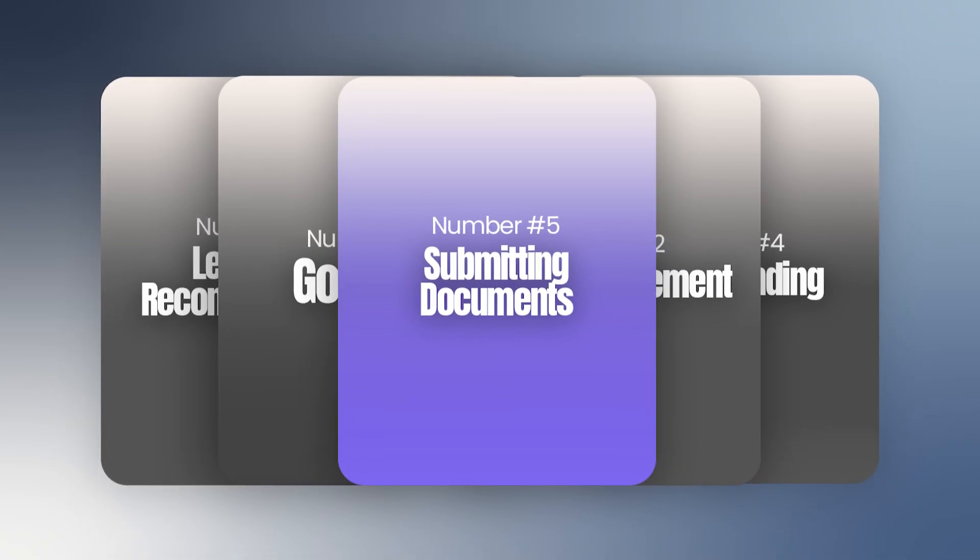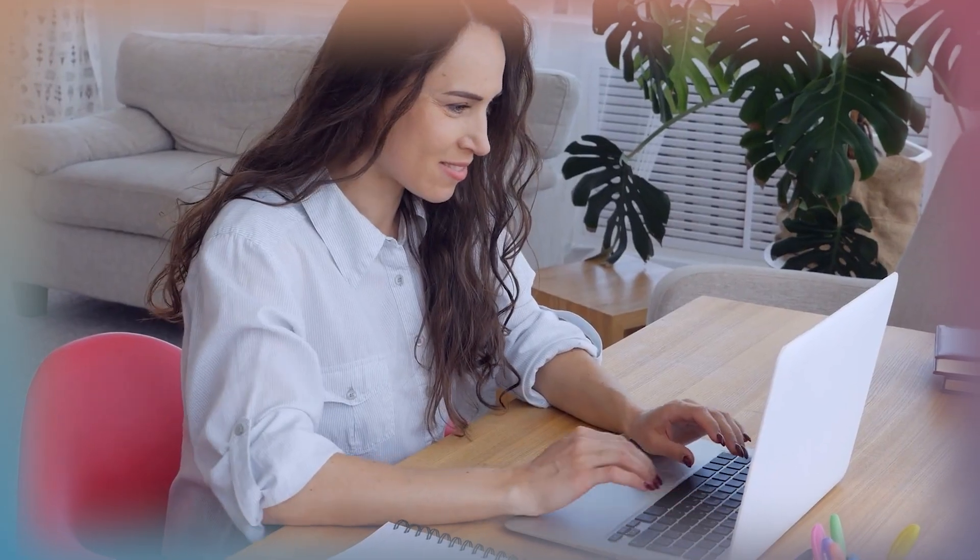The final item is actually submitting all of these materials. Each school has a different online portal where you'll upload documents in different ways, and you might have to re-enter all your CV information manually. Don't leave it to the last minute — start those applications weeks in advance because simply filling in all the fields can be time consuming. And proofread everything. At this point, reviewers are looking for reasons to exclude people, and spelling or grammar errors are an easy way to get removed from the pool before anyone evaluates your quality.